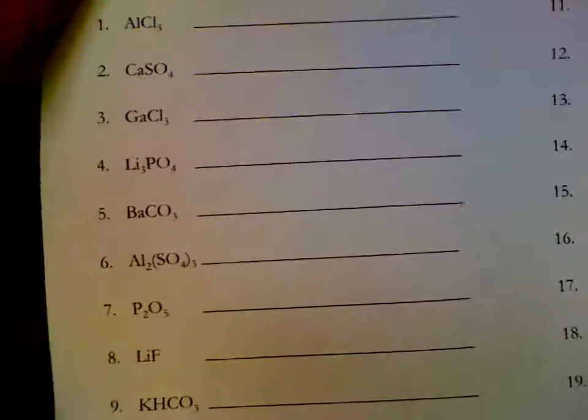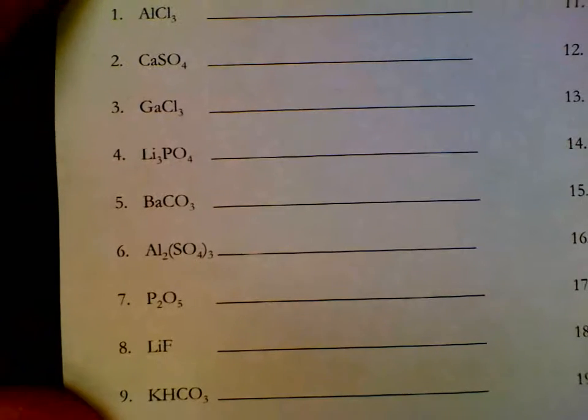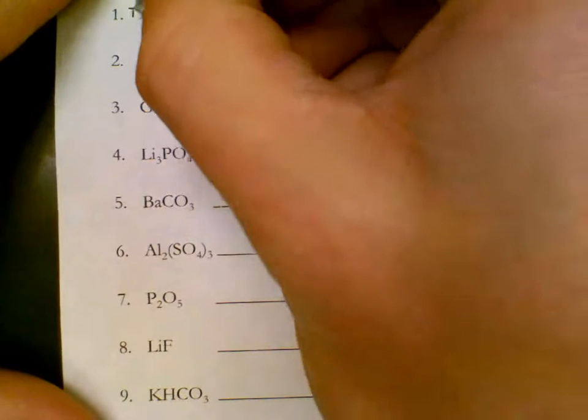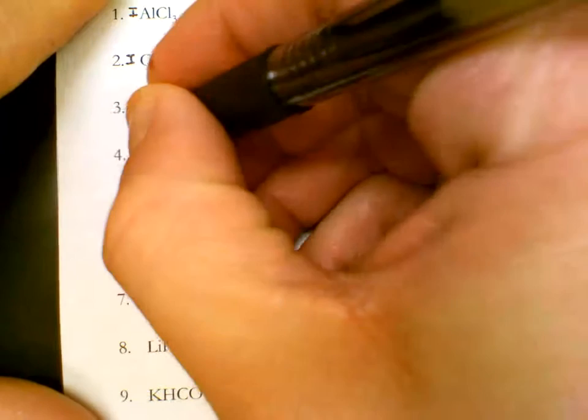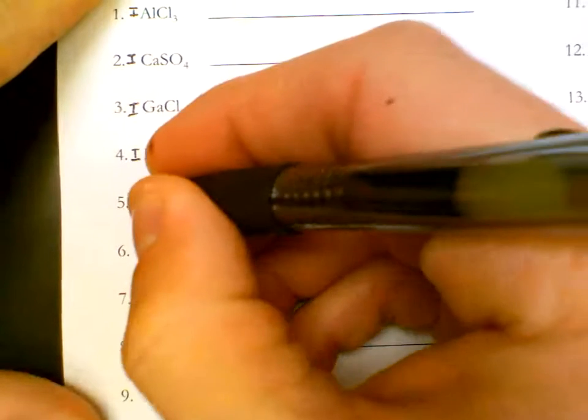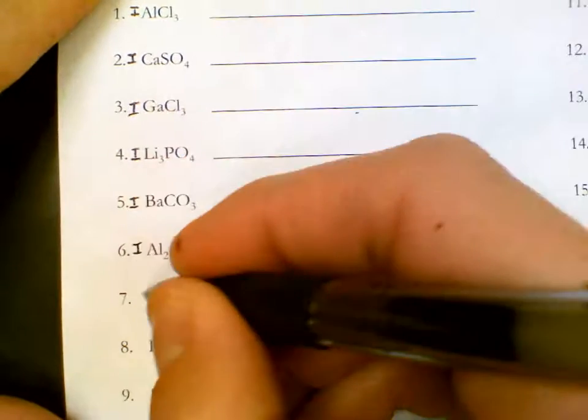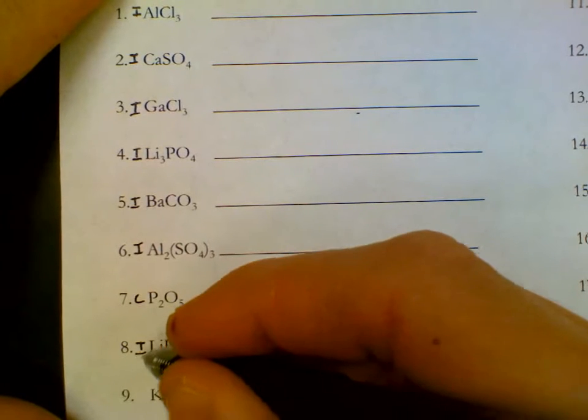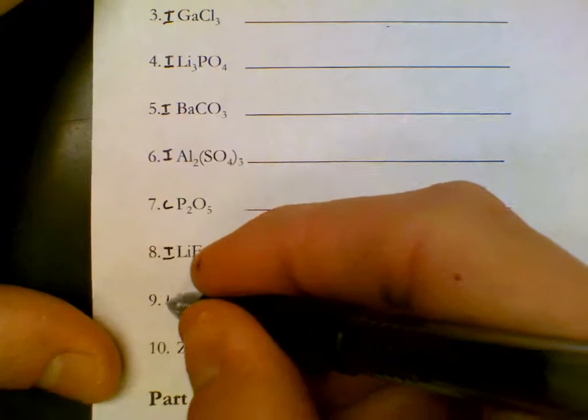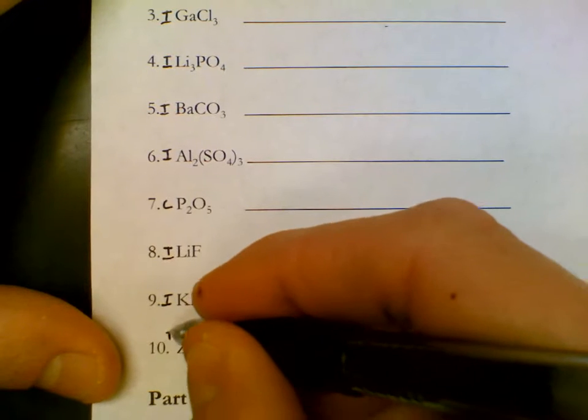Going down the left hand side of part one, number one is ionic, two is ionic, three is ionic, four is ionic, five is ionic, six is ionic, seven is covalent, eight is ionic, nine is ionic, ten is ionic.